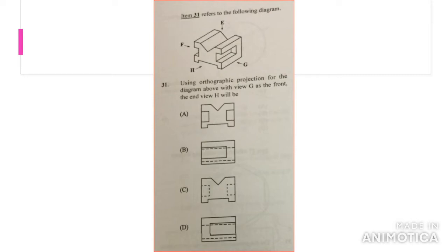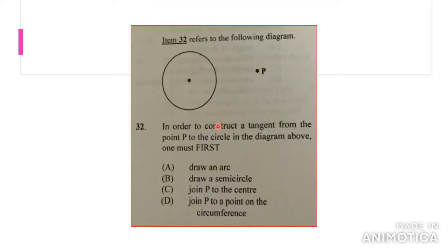Using the orthographic projection for the diagram above with view G as the front, the end view H will be this object right here. As you can see, this is the shape. You have the front, which is G, and the end view for the front would be B. But the answer that we're asked for, which is H, would be A.